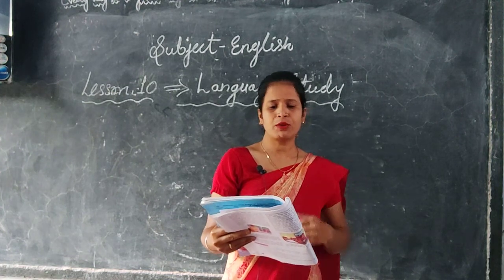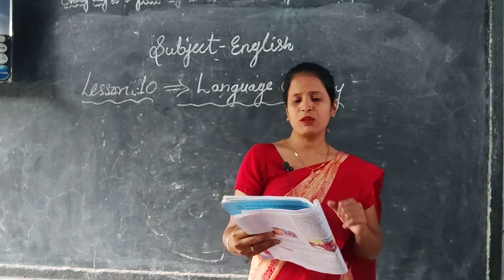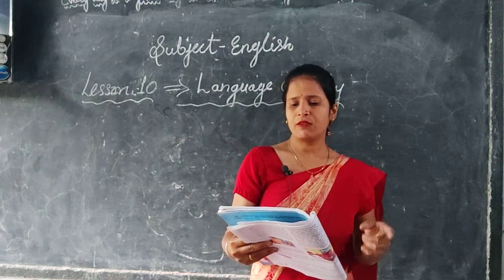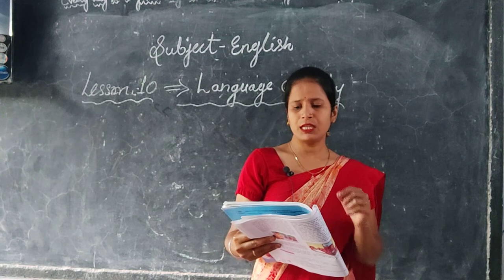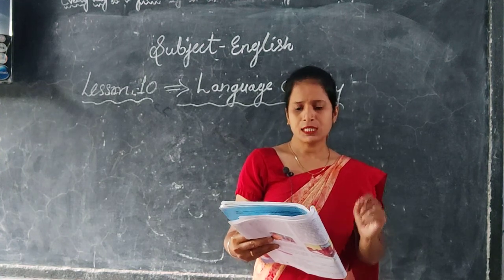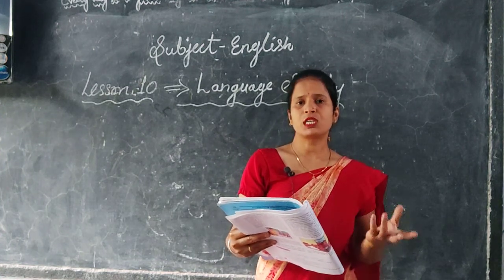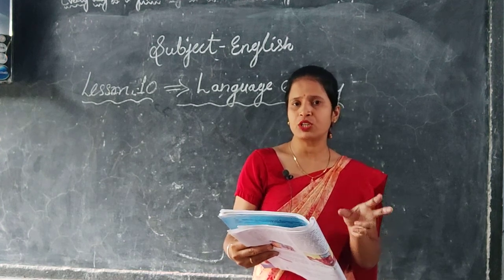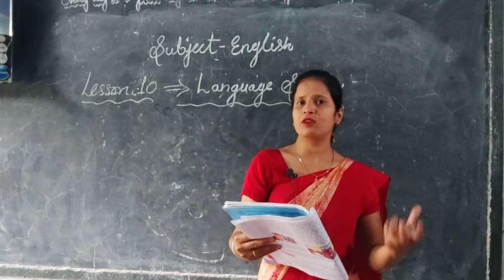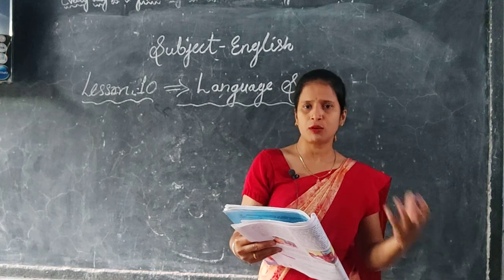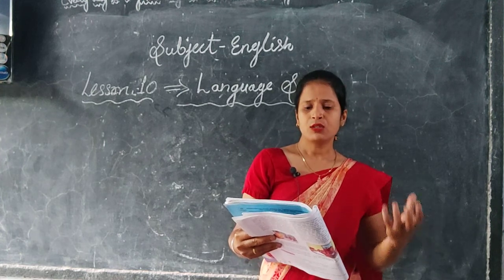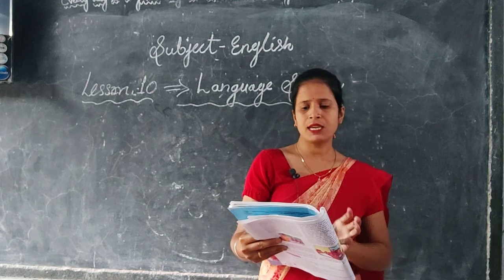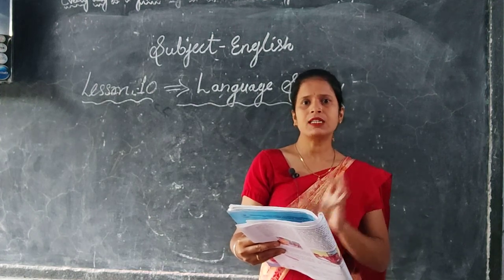Question Number 2: List as many words as you can that will go with the given adjective — at least three each. Example: 'sudden' is the adjective given here, and you have to make words by combining it with other words. Sudden — sudden change, sudden shower, sudden fall.